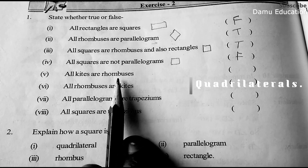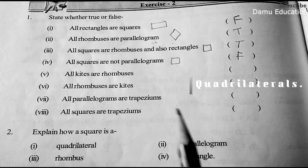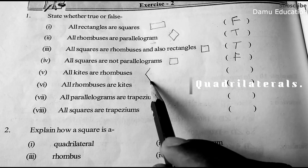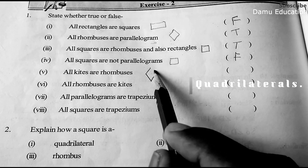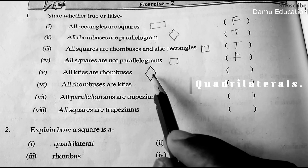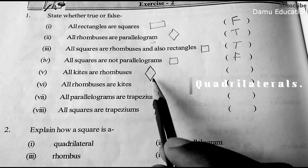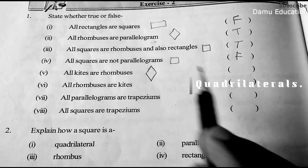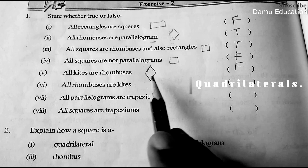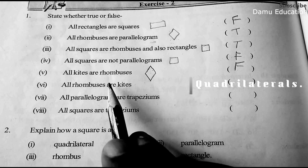Next: all kites are rhombuses. A kite has adjacent pairs of sides equal, but not all sides are equal, so this is false — all kites are not rhombuses.